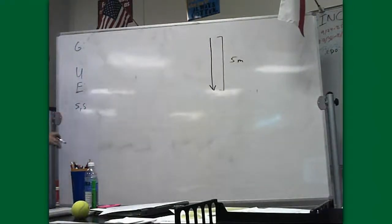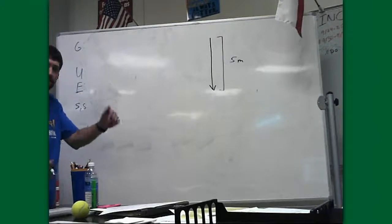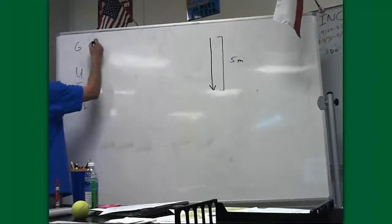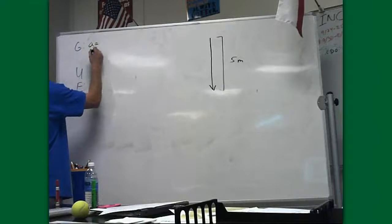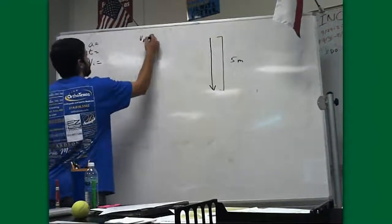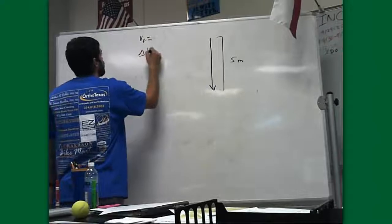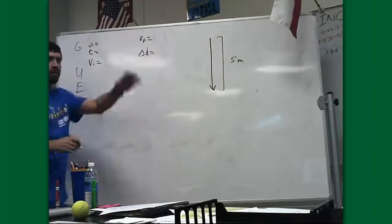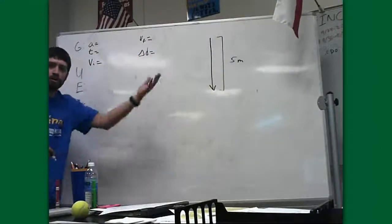Kinematics problem. So the first thing we do when we know we're doing kinematics is ATVVD, right? Write down our equations. A, T, VI, VF, and delta D. And we ask ourselves, do we know all of these things?